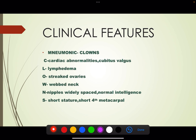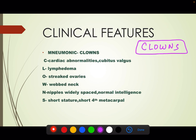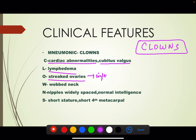What are the clinical features? To remember the clinical features, we will use the mnemonic CLOWNS. C stands for cardiac abnormalities and cubitus valgus. L stands for lymphedema. O stands for streaked ovaries — basically abnormal ovaries leading to infertility. W stands for webbed neck. N — the nipples are widely spaced; they have a broad chest with widely spaced nipples and normal intelligence.